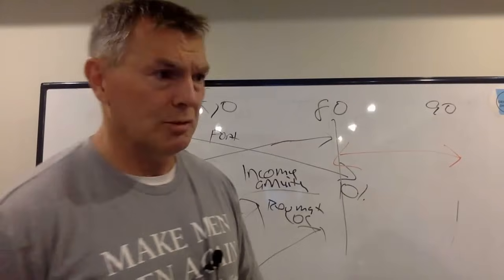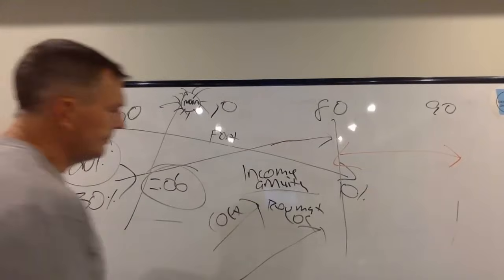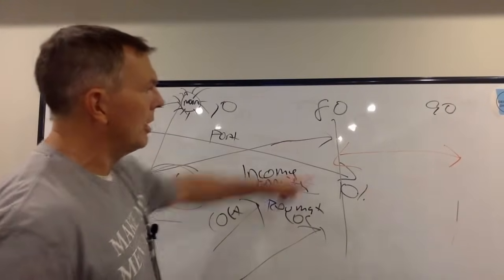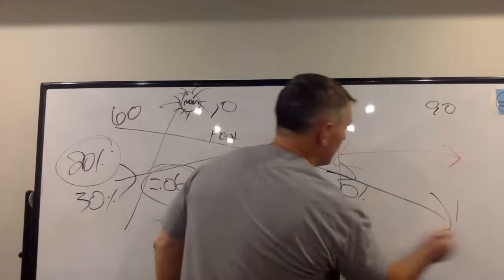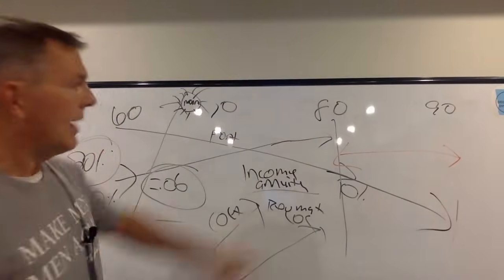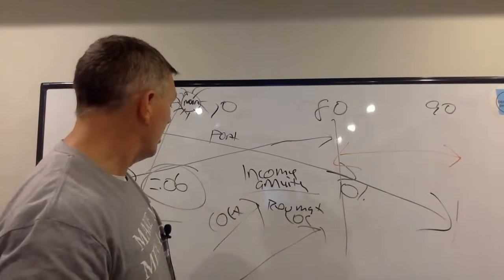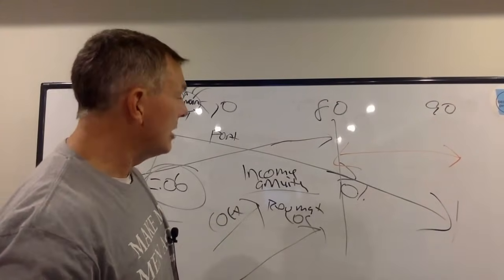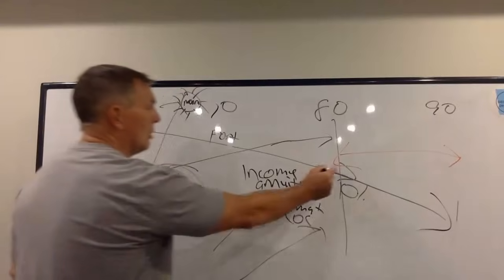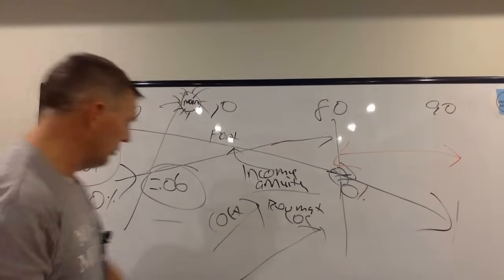In this case, a reverse mortgage line of credit can grow to offset some of this if we're going down to zero. We still need some kind of income, so we have to do something to mitigate this time. We can do a home equity line of credit, a reverse mortgage line of credit, or an income annuity at some stage.